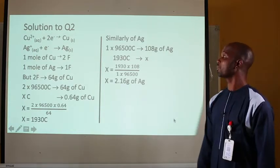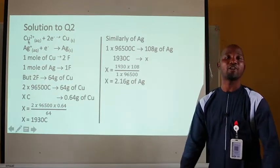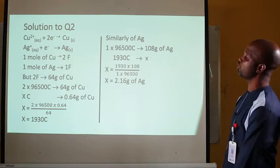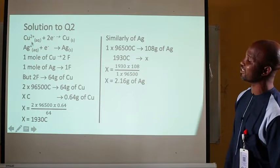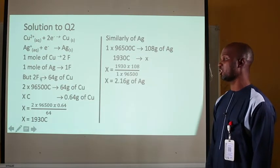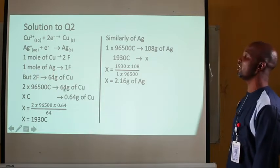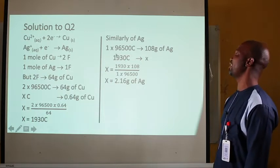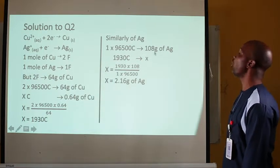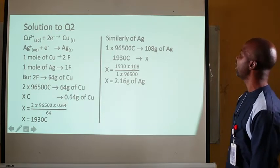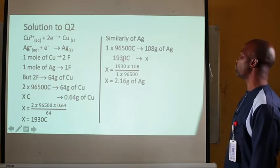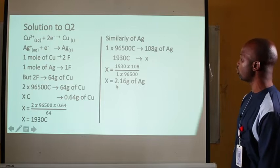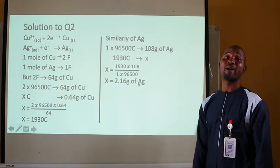For Question 2, applying the second law of electrolysis: the same quantity of electricity passes through both cells. First, find the quantity of electricity from the copper cell. The result is x = 1,930 coulombs. Since silver has a charge of +1: 1 × 96,500 coulombs deposits 108 g of silver. Therefore, 1,930 coulombs deposits x grams of silver. Solving: x = (1,930 × 108) / 96,500 = 2.16 grams of silver.